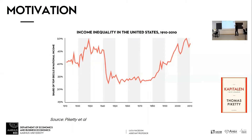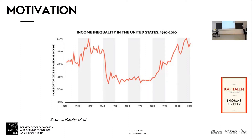In this figure we have a particular measure of income inequality in the United States — the share of the top decile in national income. How much of the total US GDP is earned by the richest 10%? The richest 10% in the US, the top decile, in 1910 was earning about 40% of national income.